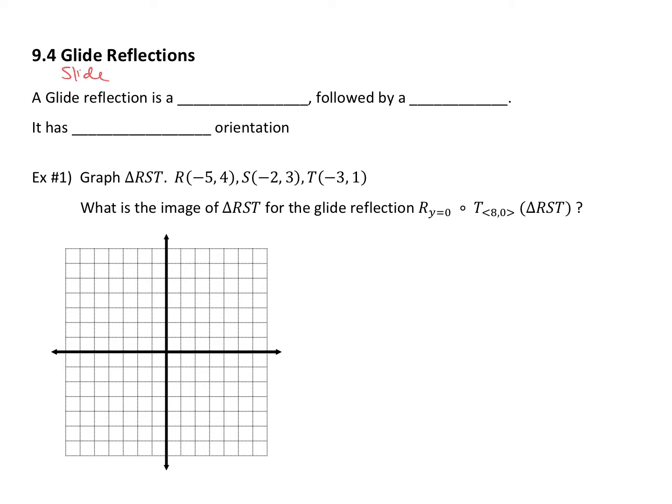So you know how to do a translation, a slide, and you know how to do a reflection. Now we're going to do them together, but you have to make sure you do them in the right order and that's the place that you really got to just pay attention. So a glide reflection is a slide followed by a flip, or a translation followed by a reflection.